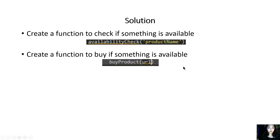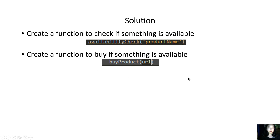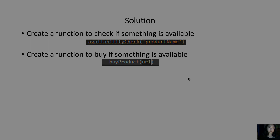I'm going to build a second function called 'buy_product' — you can name it however you want — and it takes the URL of the product and goes ahead and purchases it. That's the brief plan. This video covers building the availability_check function, and the next video we'll build buy_product, then put them all together.